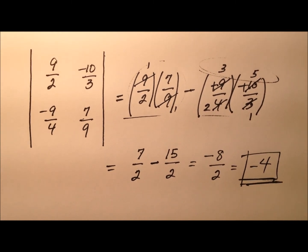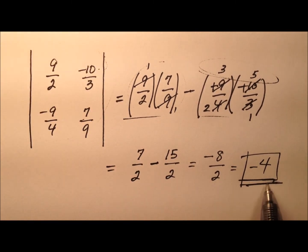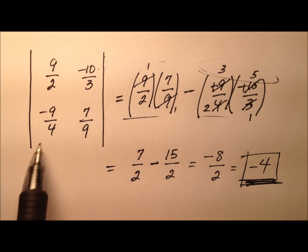So, the determinant then for this 2 by 2 square matrix, even though it contains fractions, it'll come out to be nice, negative 4.